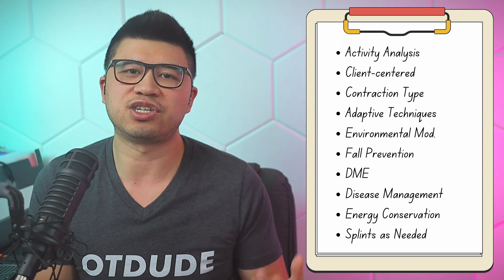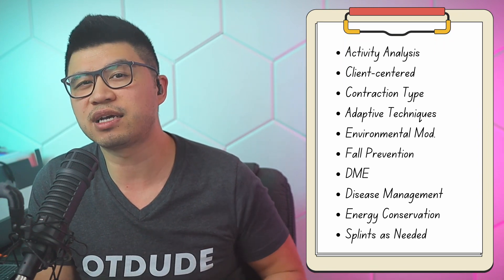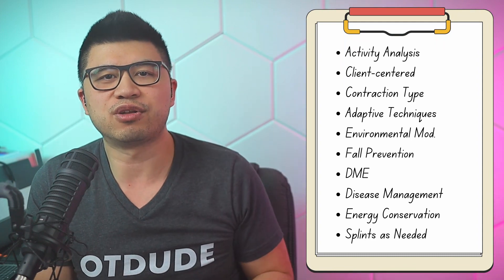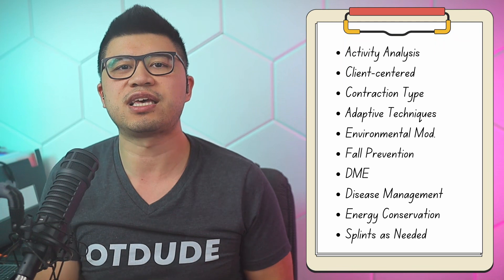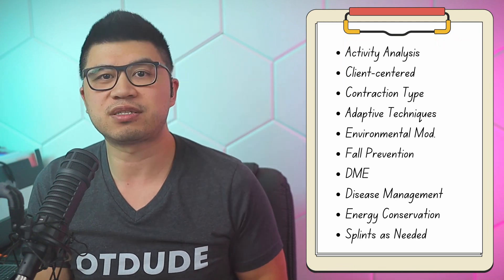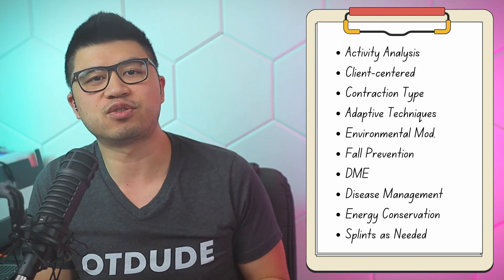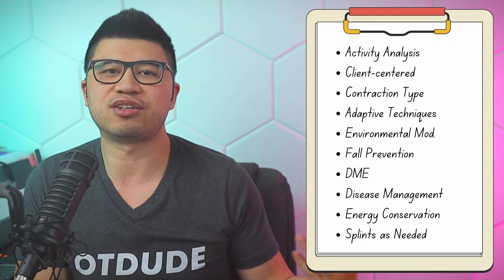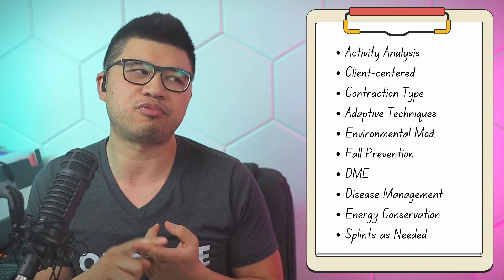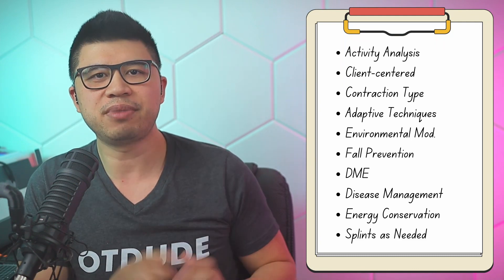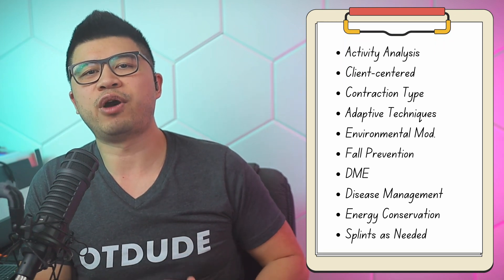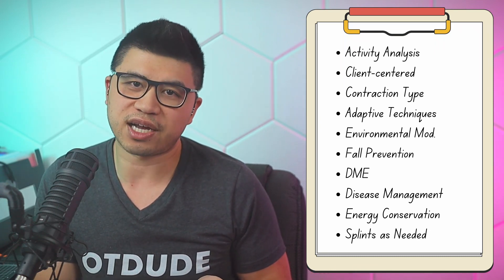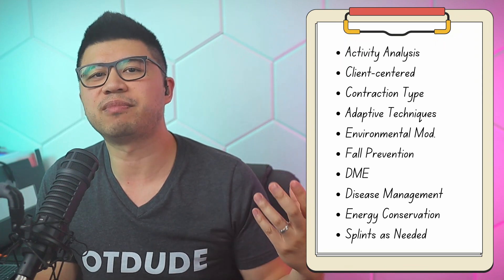Address falls with modifications such as removing throw rugs, reducing clutter, cleaning up spills immediately, and addressing lighting for the elderly or those with low vision. From a comprehensive top-down perspective, the OT can educate about the disease process, address joint protection, pain and symptom management, fatigue management, and psychosocial management. For fatigue, use energy conservation techniques and the P's: planning, prioritizing, pacing, and positioning. Avoid prolonged immobilization, as this can lead to joint stiffness, contractures, muscle atrophy, and compromised occupational performance long-term.